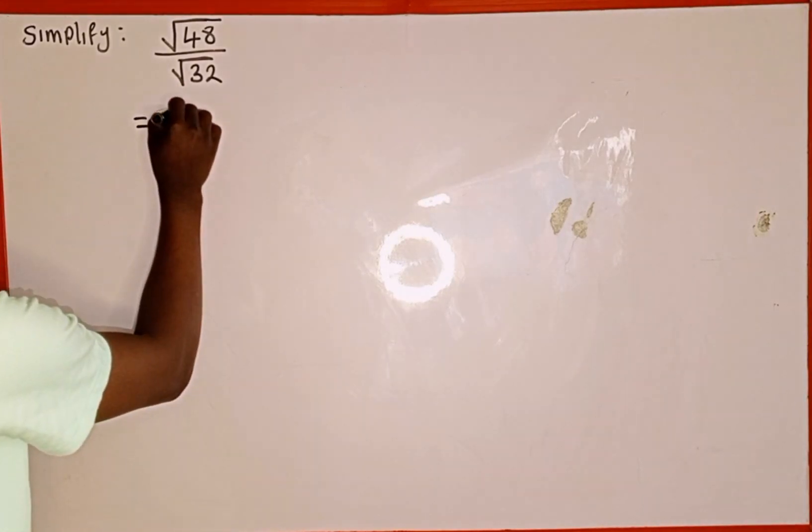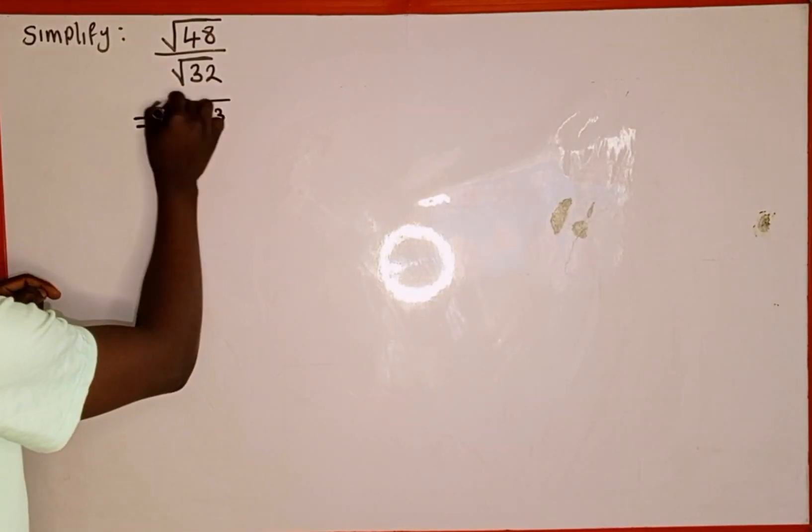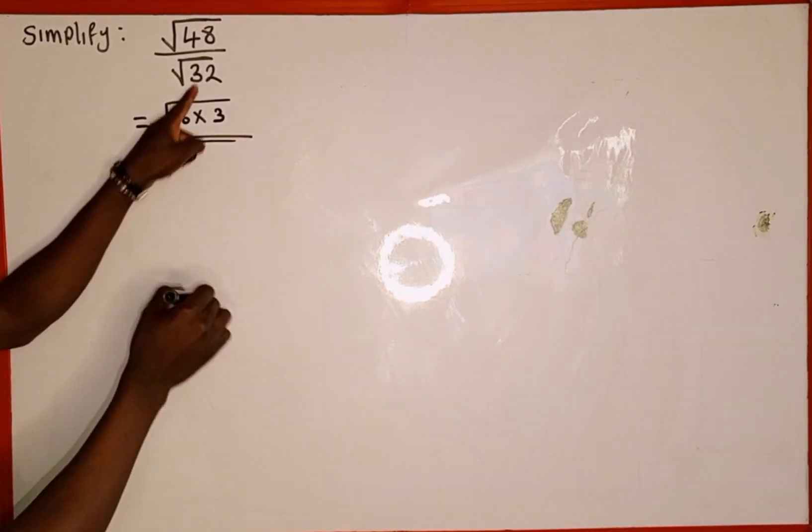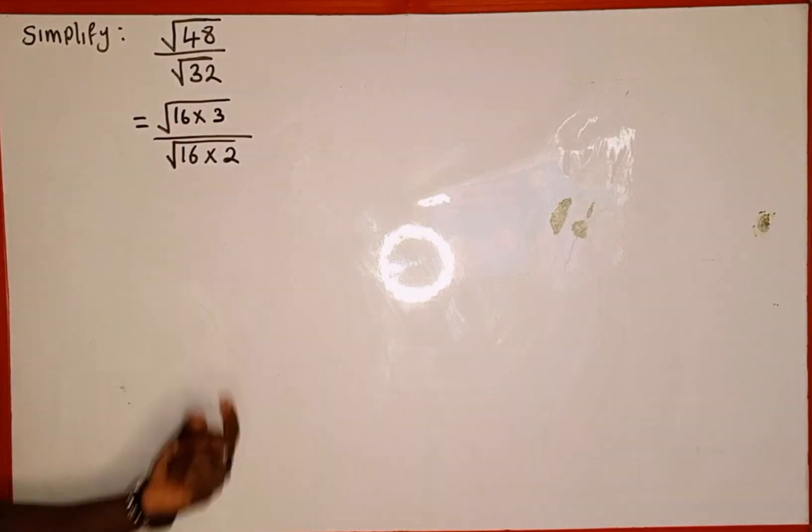So we're going to have, if you multiply 16 multiply by 3, it's going to give us 48. Then we put our square root, then divided by what? Square root 32 is the same as what? 16 multiplied by 2. We know that 16 is a perfect square.